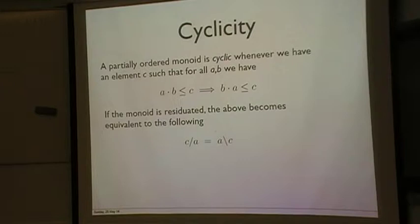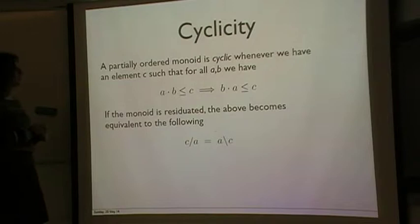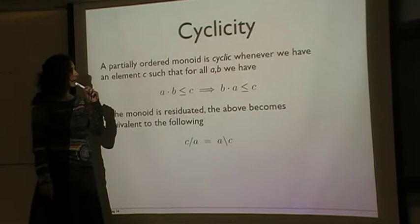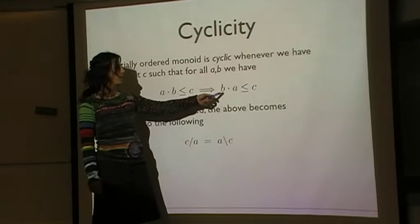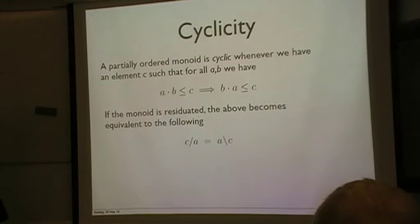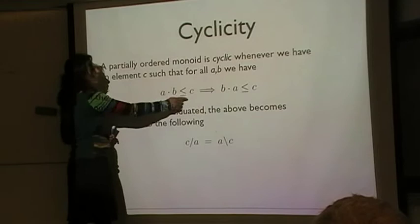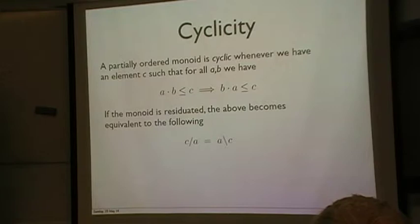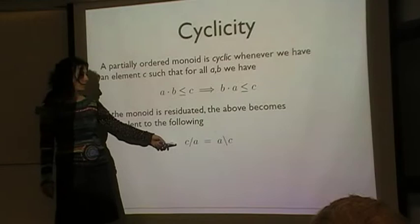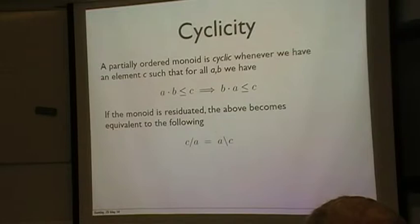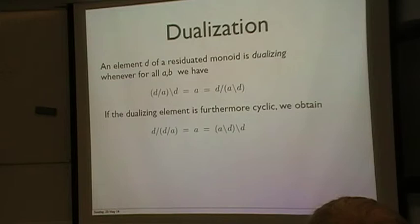Right, so then there is a property first time pointed out in this context by Yetter when he was working at algebraic semantics for linear logic in the context of quantales. So he said, he defined a cyclic partially ordered monoid as follows. A partial ordered monoid is cyclic whenever we have a special element C in the monoid, such that for all A and B elements of the monoid, if A multiplied by B is below C, then so will be B multiplied by A. So although the multiplication is not necessarily commutative, you get a weaker point of commutation if the multiplications are below this special element C. So you cannot in general commute, but if you are below C, you can commute. And then if the partial ordered monoid is more of a residuated, then this property becomes equal to this property. Probably you've seen this around, but not this one around. So the left and right hand side multiplications by C are equal to each other.